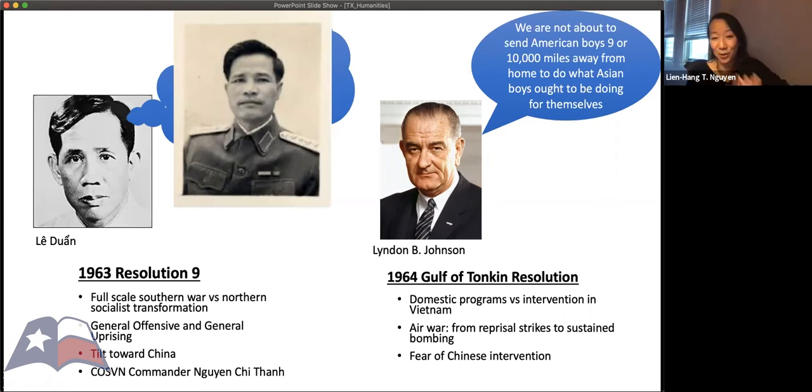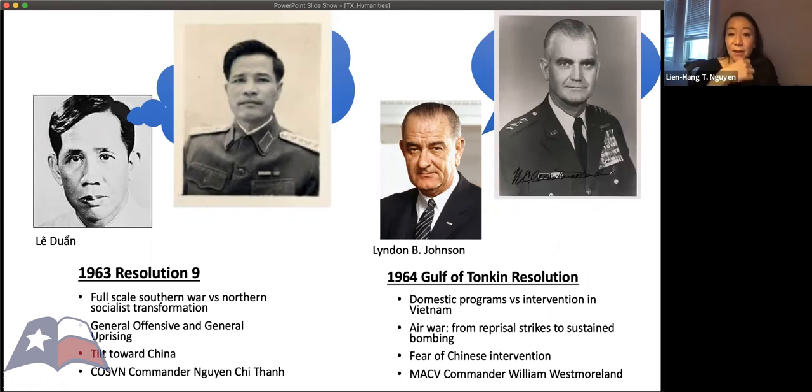He paints Barry Goldwater as that. So he wants to look more like the peace candidate. If you elect Barry Goldwater, he's going to start a nuclear war that's going to annihilate a girl picking a daisy. That's a very popular commercial that made headway during the election year. In any case, he promises in his campaign that he would not send American boys nine to 10,000 miles away to do what Asian boys ought to be doing themselves.